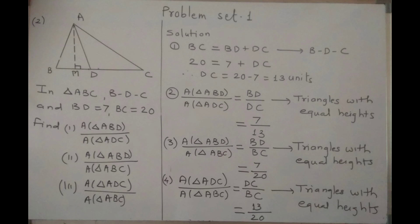Next: area of triangle ABD upon area of triangle ABC is equal to BD upon BC. Again, these two triangles have equal heights — don't forget to write the reason. Substituting the values, area of triangle ABD upon area of triangle ABC equals 7 upon 20. Similarly, area of triangle ADC upon area of triangle ABC equals DC upon BC, which is 13 upon 20.